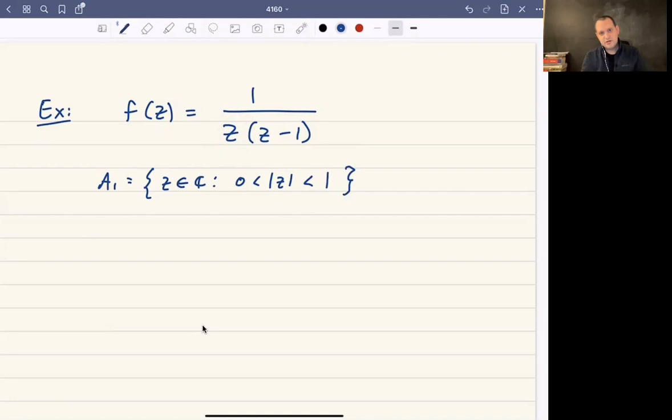It's the open disk of radius one centered at the origin, but we remove the center. And then we can also look at A2, which would be the set of complex numbers where the modulus of z is bigger than one. Those are going to be the two annular regions that we can define our function over. So these are the two natural ones.